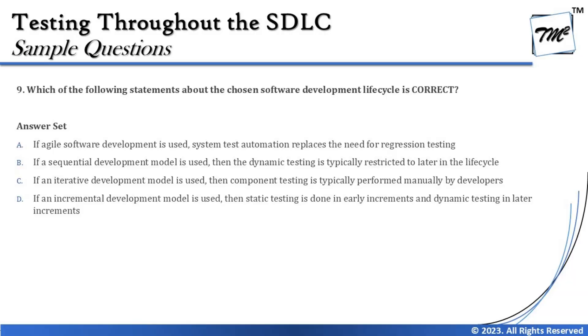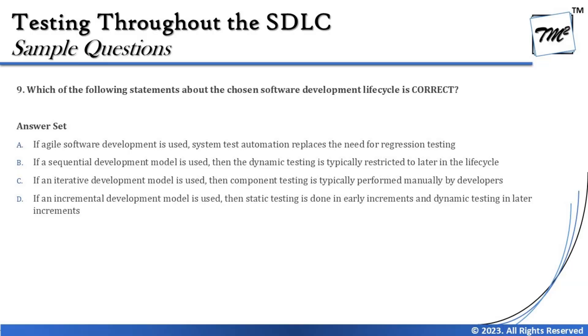Question number 9: which of the following statements about the chosen software development life cycle is correct? We've discussed SDLC extensively — what it is, when testing gets performed, and how testing gets organized in different SDLC models. We have three different categories: sequential, incremental, and iterative. Since the context may not be defined in the question, we go through the options to find the right answer.